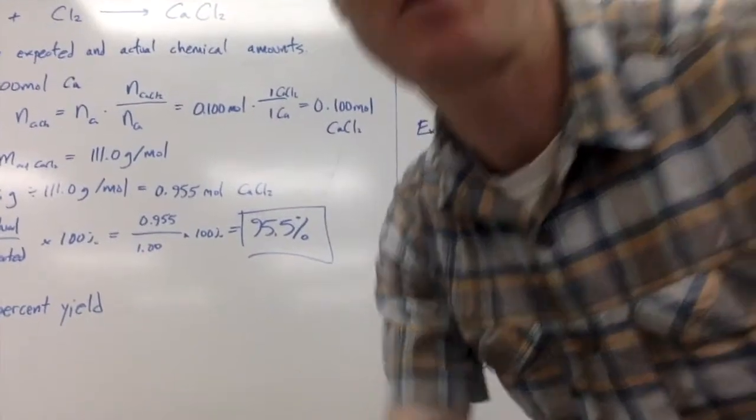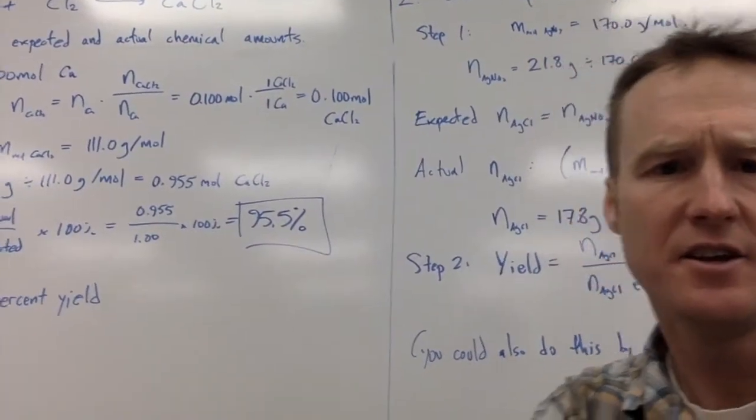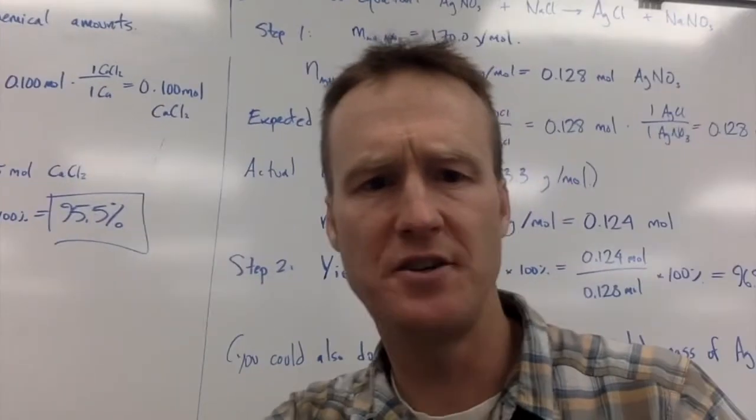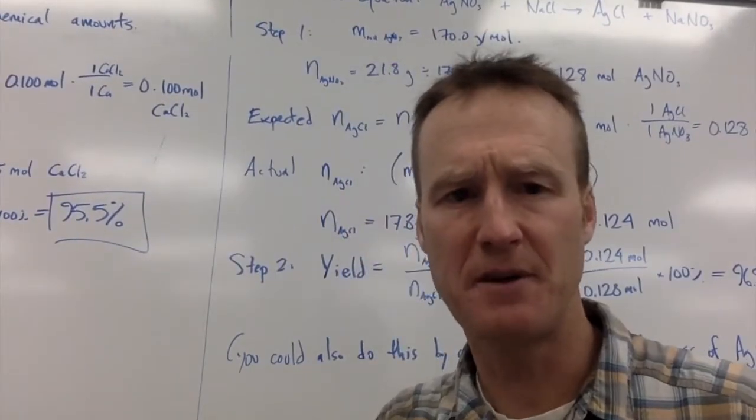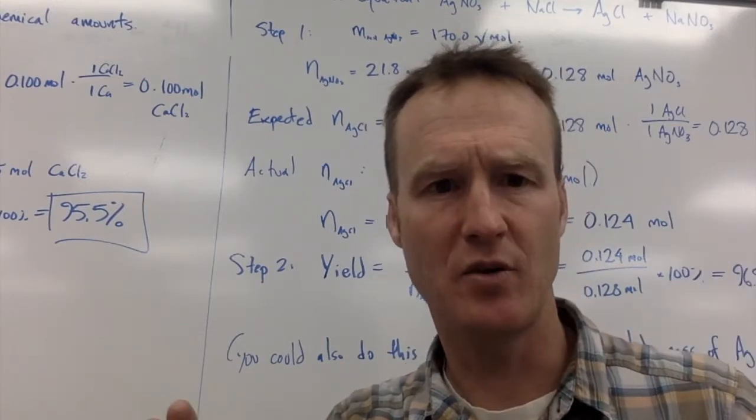Being said, in a reaction like that you're normally going to be burning most of it, and you can quantify that using a concept called the percent yield. That's what you are going to be looking at today using a number of different reactions. So with percent yield, what you want to do is use your stoichiometry methods that you've learned so far.